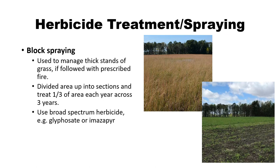Another option is block spraying — also used to manage thick stands of grass, especially when followed with prescribed fire. Dividing the area into sections and treating one-third over three years has the same effect as strip spraying, just in blocks instead of strips, creating different successional habitats for wildlife. Fire alone removes thatch but won't manage grasses long term, while herbicide treatment is very effective but leaves thatch. A great combination is herbicide treatment followed by a burn once the thatch is ready to burn, exposing some bare soil.